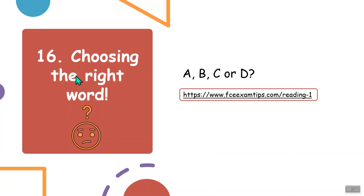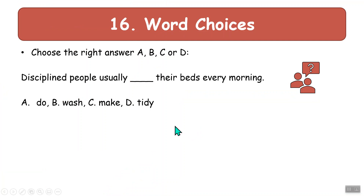Topic 16 is choosing the right word. This is exam practice — multiple choice, so A, B, C, or D. You have to choose the right one. When you do these types of exams, always write one answer. Don't leave it blank. You have a 25% chance of getting it right.